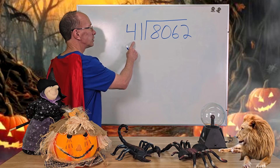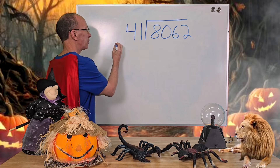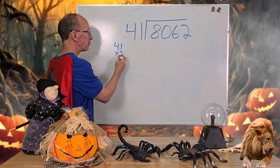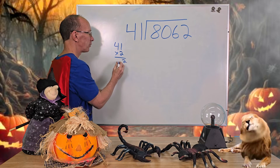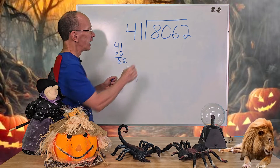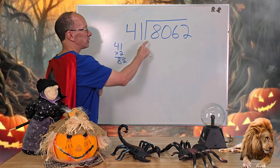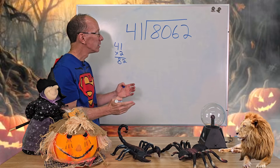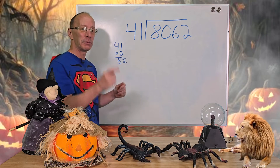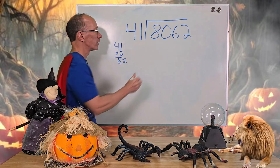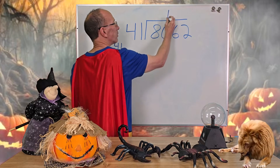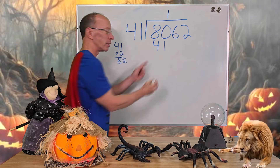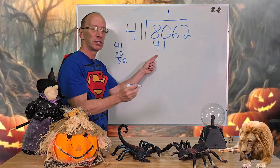First of all, let's do a little figuring off to the side. I'm going to take 41 right here and multiply it by 2. So 2 times 1 is 2, 2 times 4 is 8. If I take 41 times 2 and try to put the answer of 82 into 80, it's not going to work. So 41 times 1 is the only one that's going to work right now. I'm going to put 1 right here, and then 1 times 41 would be 41. I'll write the number right here, and then our next step is to subtract.